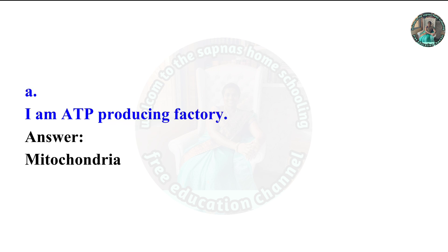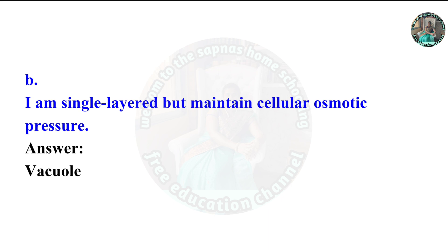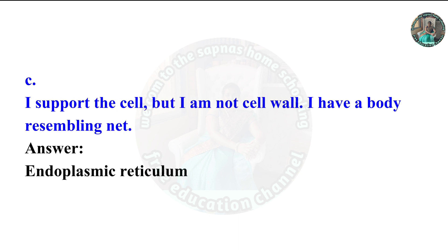Answer A: 'I am an ATP-producing factory' — mi ATP tayar karnacha karkhana ahi. Answer is Mitochondria. Answer B: 'I am single-layered but maintain cellular osmotic pressure.' The answer is Vacuole.